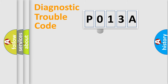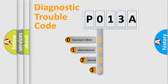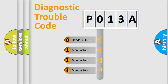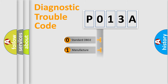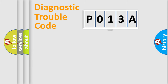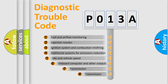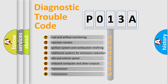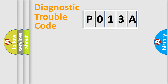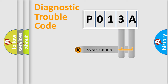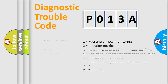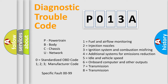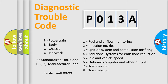This distribution is defined in the first character of the code. If the second character is expressed as zero, it is a standardized error. In the case of numbers 1, 2, or 3, it is a more specific expression of a car-specific error. The third character specifies a subset of errors. This distribution is valid only for the standardized DTC code, and only the last two characters define the specific fault of the group.